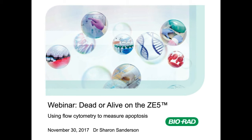Sharon obtained a degree in molecular biology from the University of Manchester before moving to the Institute of Cancer Research, obtaining a PhD in cell biology from the University of London, with her thesis focusing on angiogenesis. Sharon then moved to the University of Oxford, where she worked for 13 years, initially in cancer research before moving into immunology. Her most recent position was as a post-doctoral scientist in an autophagy laboratory, working on conventional and imaging flow cytometry. Sharon joined Bio-Rad earlier this year as a flow cytometry research associate, working on the new ZE5 cell analyser.